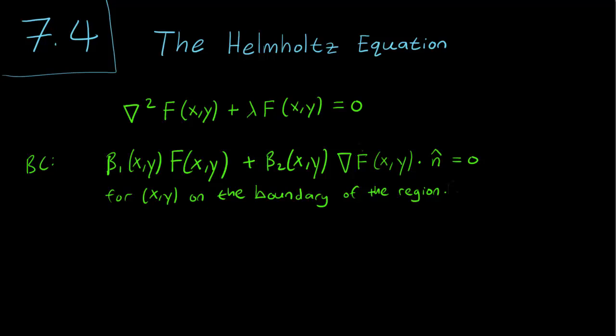The boundary condition looks a little bit different. So if you let x, y be on the boundary of the region, remember this is a 2D or 3D region, then this is what our boundary conditions look like. Remember that the gradient of f is the analogue of the derivative in higher dimensions. So we have beta 1 x y f plus beta 2 x y gradient f, dot product of that with the normal vector equal to 0. Now this gradient f dot product of normal is just the derivative. So this is the same thing as the boundary conditions we had for the one-dimensional Sturm-Liouville problems earlier in this class.